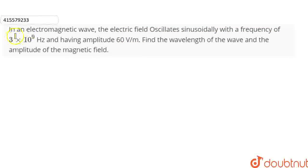Hello everyone! The question is: in an electromagnetic wave, the electric field oscillates sinusoidally with a frequency of 3×10⁹ Hz and having an amplitude of 60 V/m. Find the wavelength of the wave and the amplitude of the magnetic field.